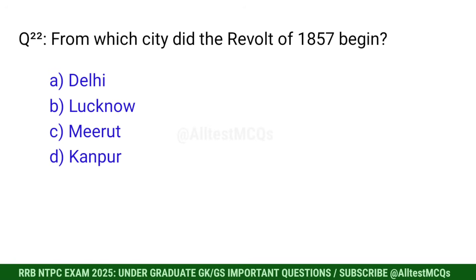Q22. From which city did the Revolt of 1857 begin? Right option is C. Meerut.